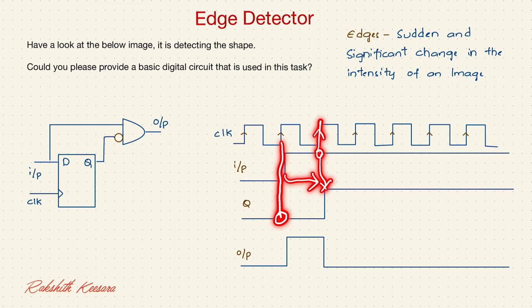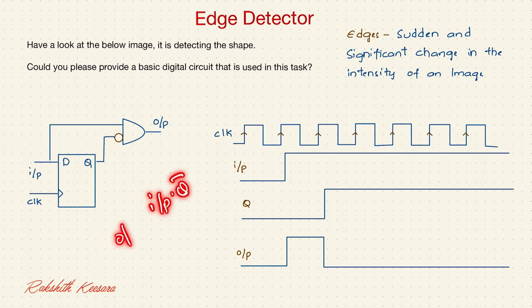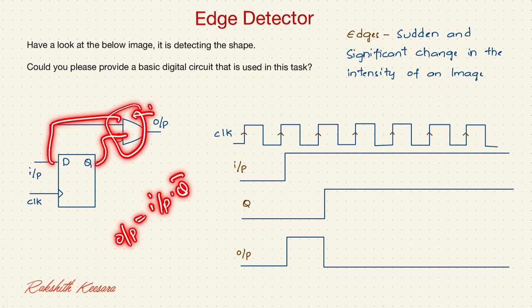So indirectly it is shifting by 1 clock cycle. And after this, we are applying our combinational logic. Input into Q bar. Output is O/P. Input into Q bar. So this is the circuit that is used to detect a rising edge.